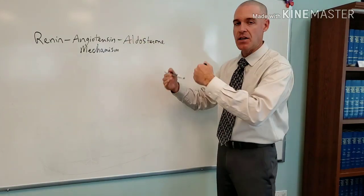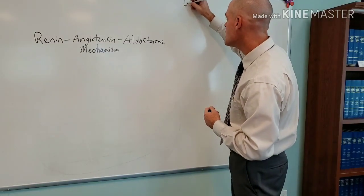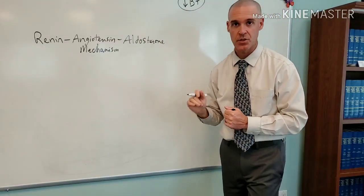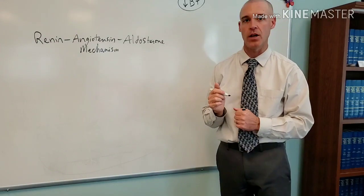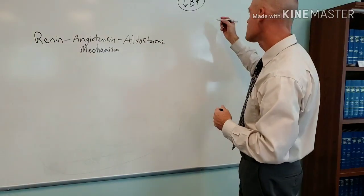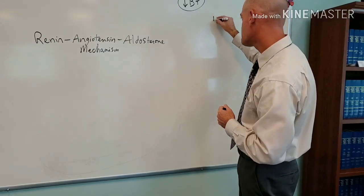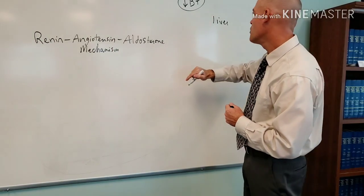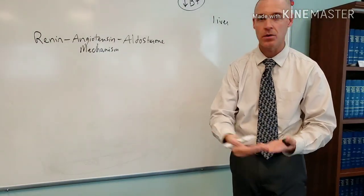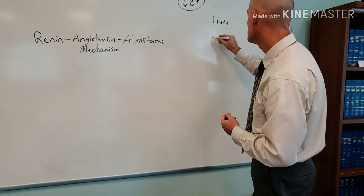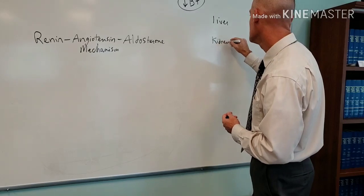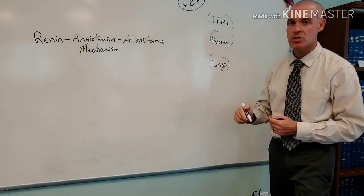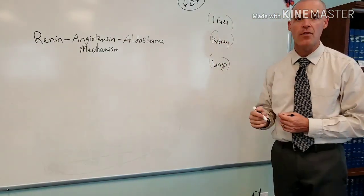So we could call this mechanism different things, but basically what's happening is we are getting a drop in blood pressure, and that is triggering this mechanism. So just what you see here, we get the drop in blood pressure, and any time we think about this renin-angiotensin-aldosterone mechanism, we want to think about liver-kidney-lungs, so we know the organs of importance here.